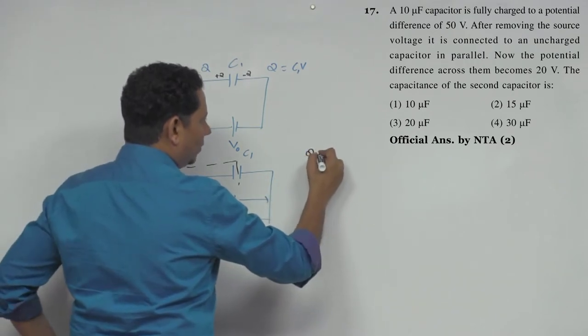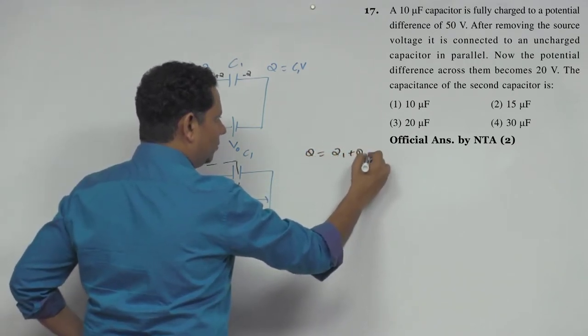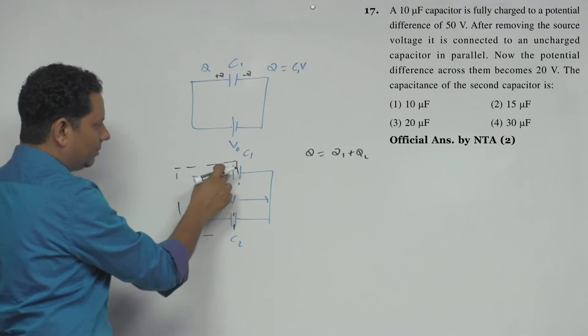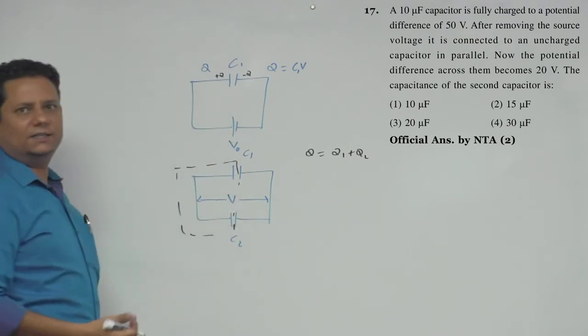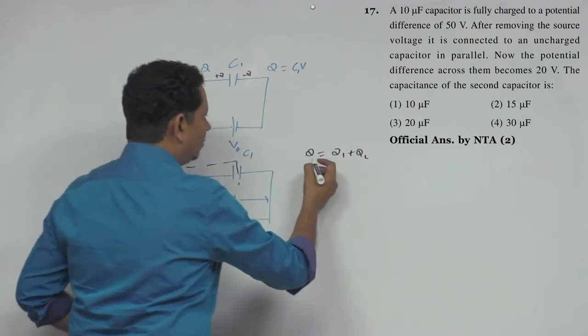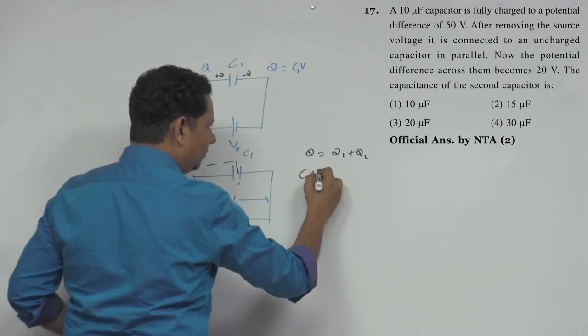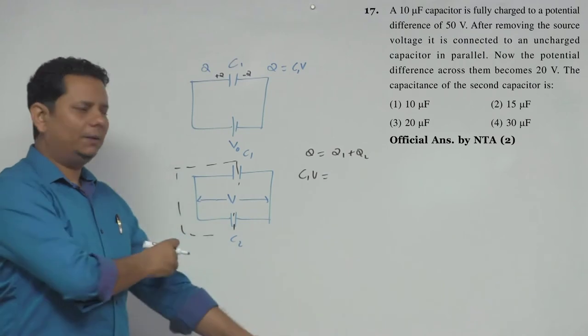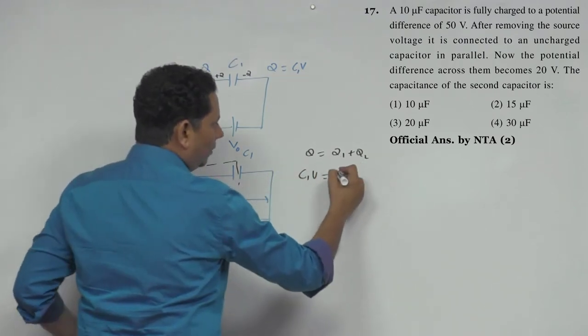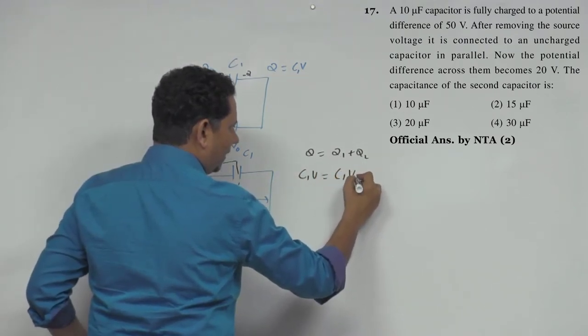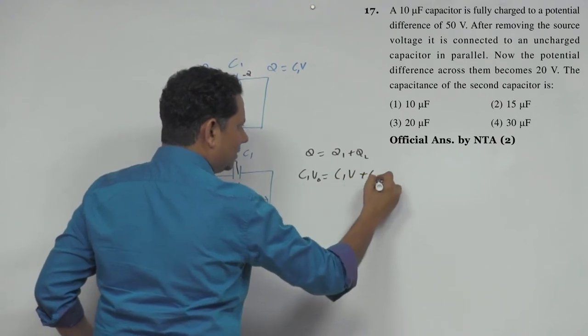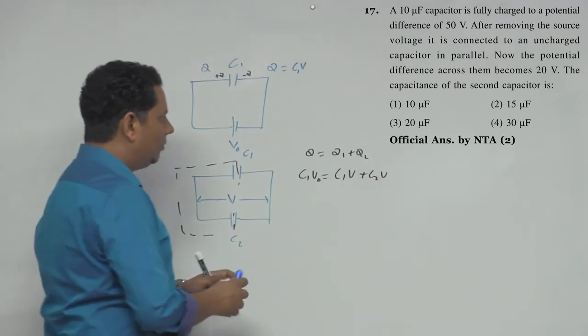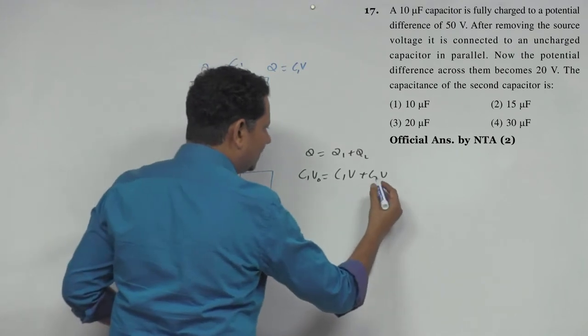तो इसको हम यहाँ पे कह सकते हैं कि total charge will be equal to Q1 plus Q2. जो इसके ऊपर total charge Q1 था इस plate पे, यहाँ पे वही Q1 और Q2 में redistribute हो जाएगा. Which means total charge Q है, उसको हम लिखेंगे C1V.